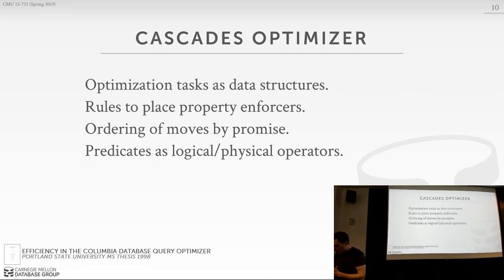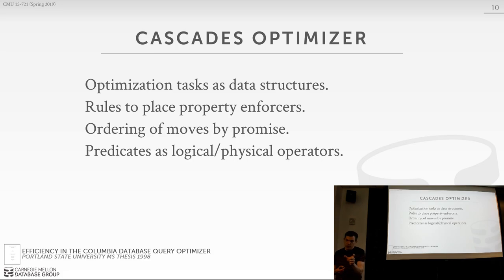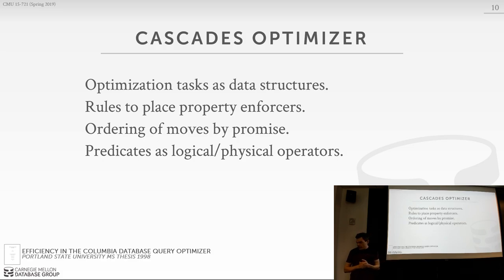The reason I had you read the Columbia paper rather than the Cascades paper is that the Cascades paper is not very good — it keeps talking about how great object-oriented design is without getting into details. Those 30 pages from the Columbia master's thesis are, in my opinion, the best description of what Cascades actually does. If you understand Columbia, you understand Cascades at the high-level constructs.